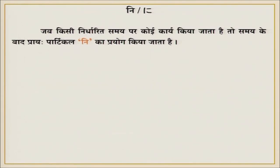Now we have talked about a new particle — particle ni. This particle ni is used with time. Until now you have said: 'ima rokuji desu' — it is six o'clock now. But if you are doing something at six o'clock, you say: 'Watashi wa rokuji ni okimasu' — I wake up at exactly six. The particle ni comes after the time. It is important to remember: ni comes after the time expression, not before it.